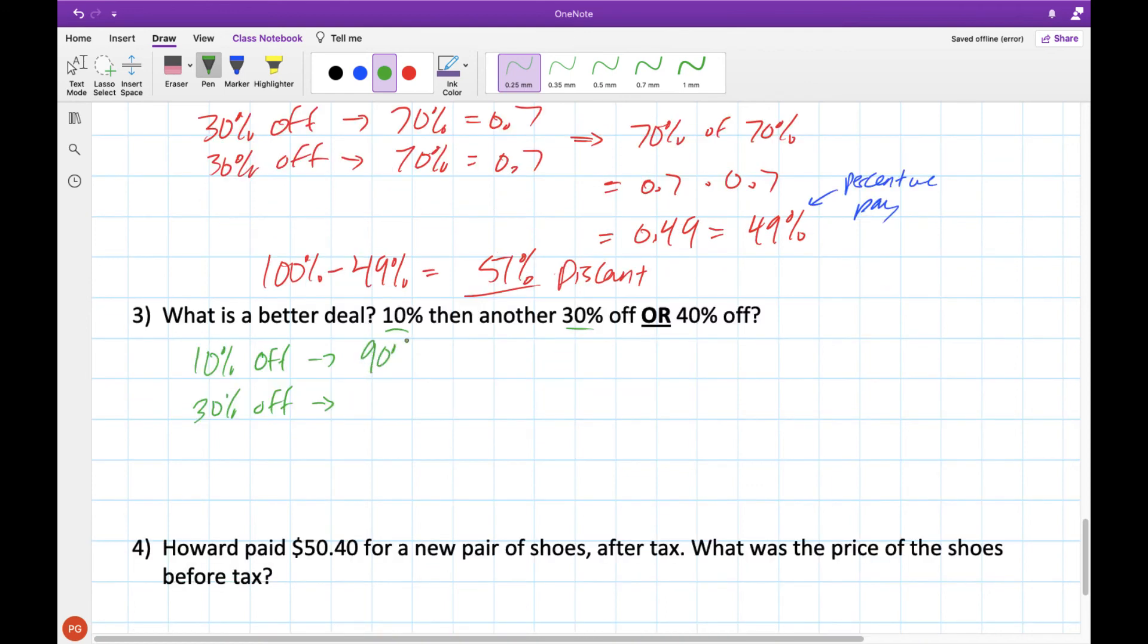So 10% off is the same as paying 90%. 30% off is the same as paying 70%. And if we want 10% of 30%, that's like 0.9 times 0.7, which is the same as 0.63 or 63%. Remember, that's the amount that we are paying. So what's our discount? Well, that would be like 100% minus 63%. So we get an answer of 37% discount for this part here.